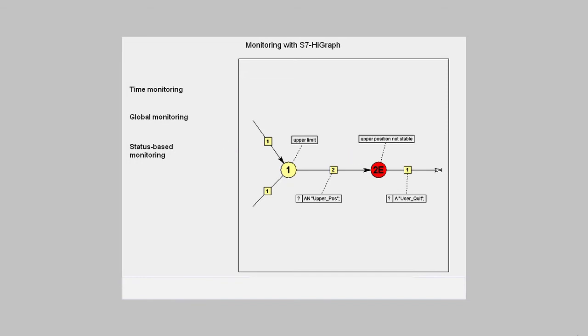In all three types, the error text is generated automatically from the state number, the name of the graph group, and the state graph.